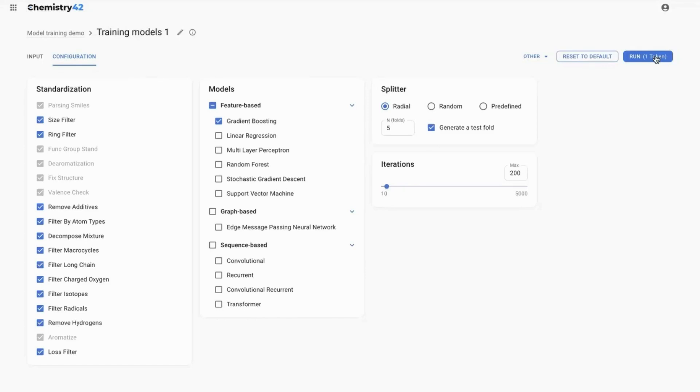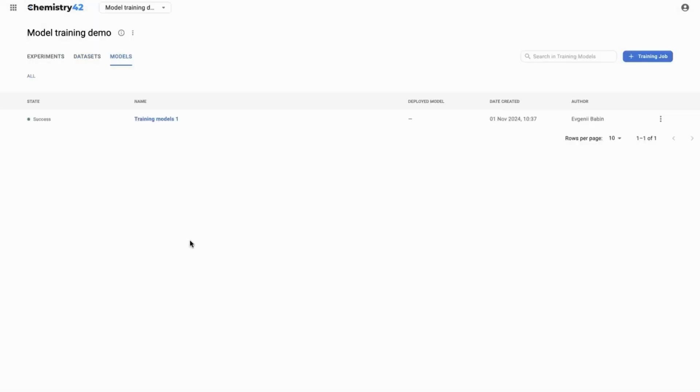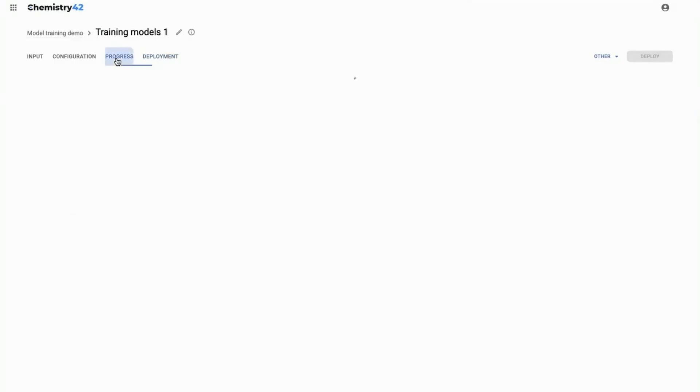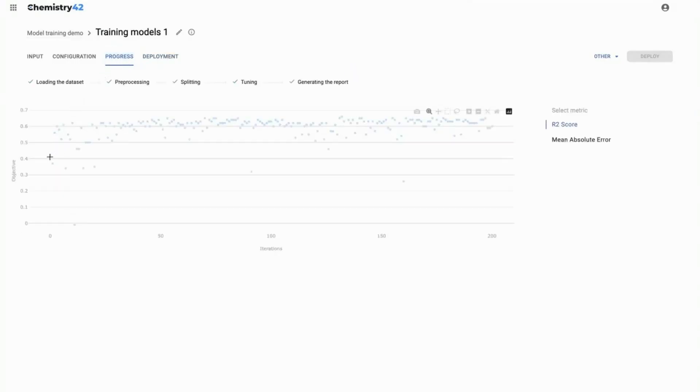After that, click the run button to start your model training. The progress on model training can be seen in the progress tab. This tab shows you the current attempts, metrics for each attempt, and navigate between different metrics such as R-squared and mean absolute error for regression.